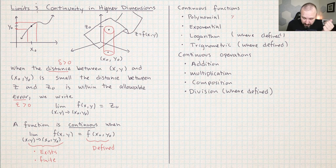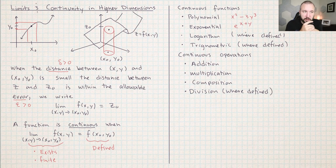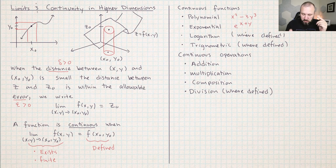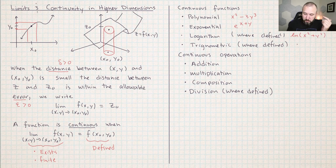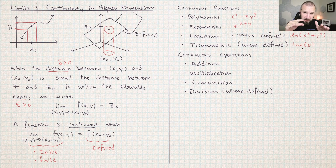We can prove that all of these families of functions are continuous. Polynomial functions — like x² minus 3y³ — are automatically continuous. Exponential functions like e^(x+y) are continuous. Logarithm functions are continuous where defined; you've got to be careful not to plug a non-positive value into a logarithm. Something like the natural log of x² plus y² is continuous because x² plus y² is always positive. Trigonometric functions require care — something like tangent, which is sine over cosine, is undefined wherever cosine is zero.